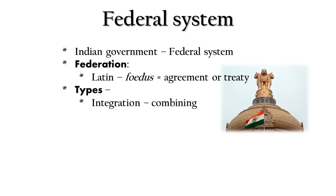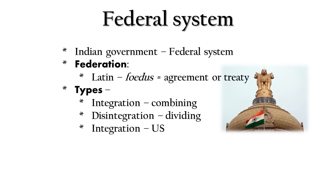Integration means combining, and disintegration means dividing. In an integration-type federation, the states or parts of a country are combined together to form a single complete nation. In a disintegration-type federation, one single country is divided into states or provinces. The example of integration-type federation is the United States of America, whereas the example of disintegration-type federation is Canada.